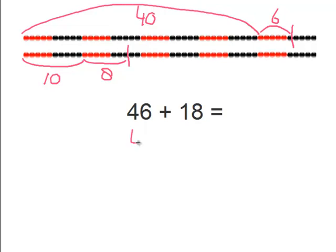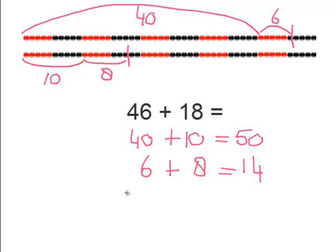So 40 plus 10 equals 50. And now the 6 plus the 8. So 6 plus 8 equals 14. Now we must add the last numbers together. So 50 plus 14 equals 64.